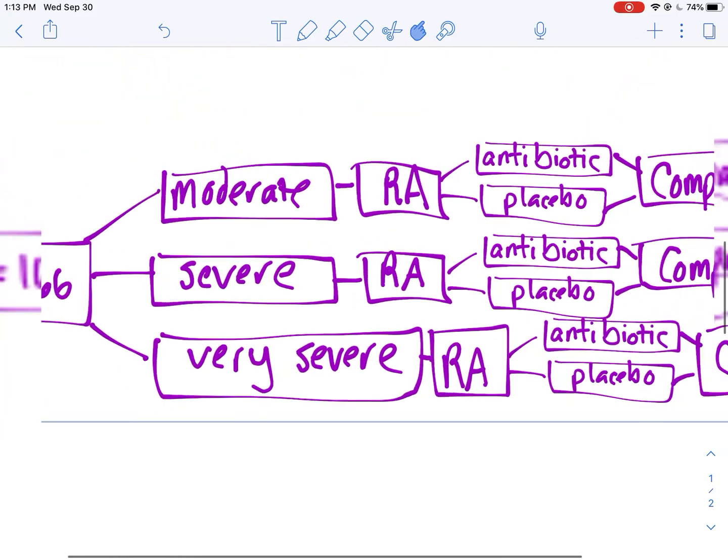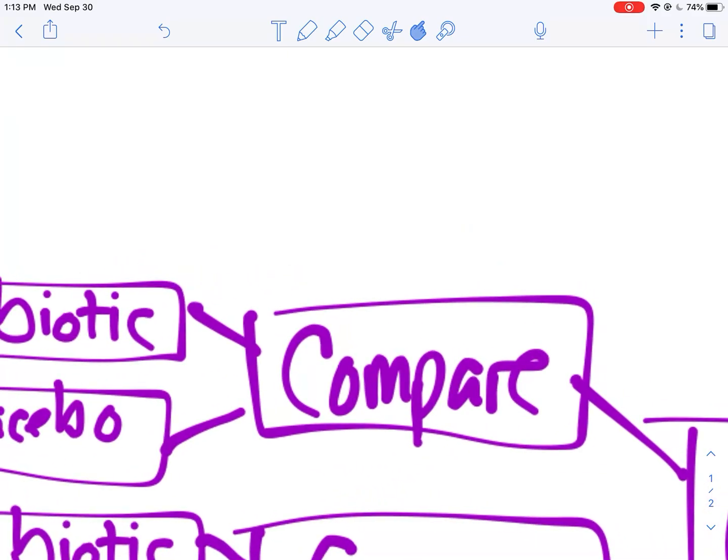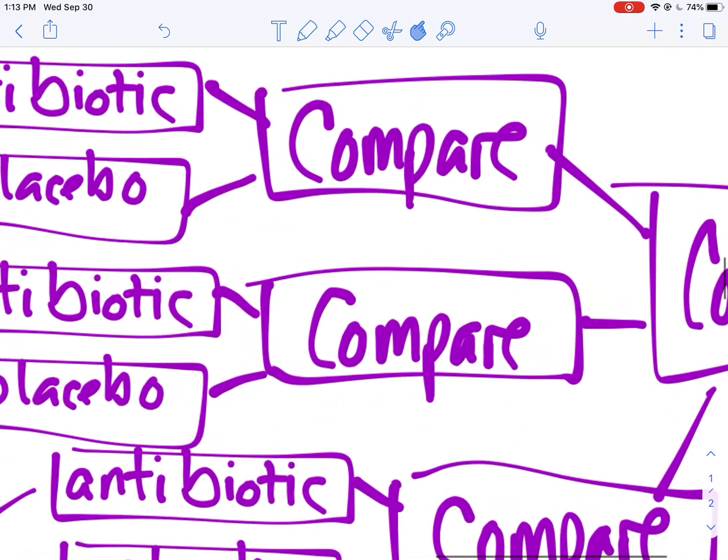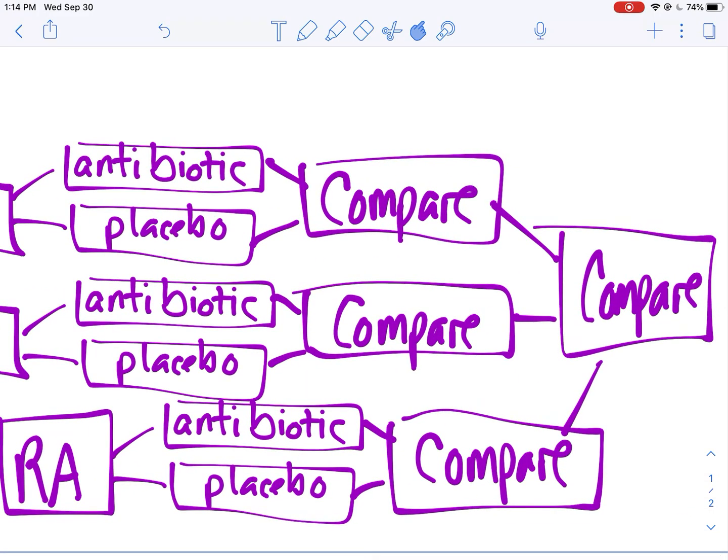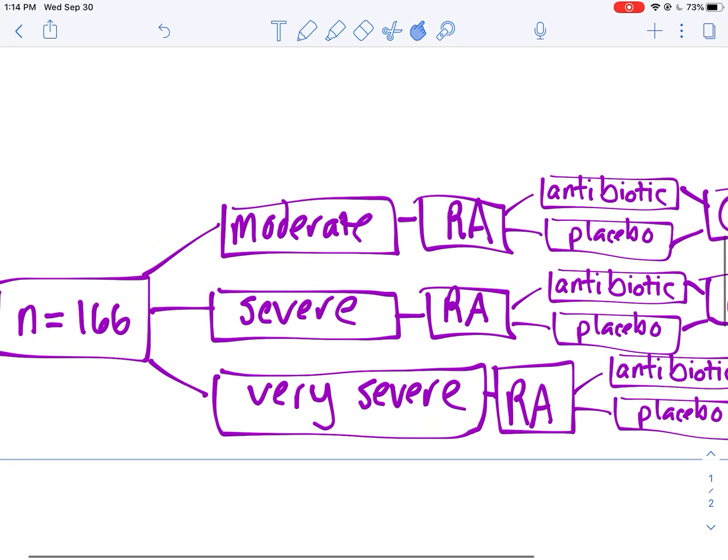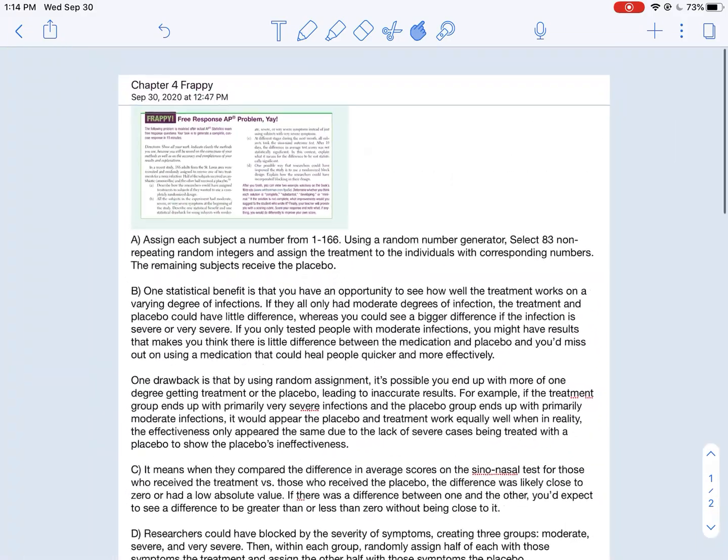I did the same thing with the severe symptoms. Randomly assigned half of them an antibiotic, half of them a placebo, compared the results. And I did the exact same thing with the very severe. What that allows me to do is by comparing within these, maybe for those with moderate I didn't notice much of a difference, but when it got to severe and very severe I noticed a big difference. So at the end, that's why I compared those three results. I can come out of this saying, well if you only have moderate sinus symptoms, maybe the antibiotic isn't, you know, maybe it's not going to help you improve that much versus a placebo. However, if you have severe or very severe symptoms, you're probably better off taking the antibiotic. I could come to that conclusion now because I accounted for that confounding variable when I blocked here.